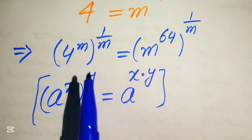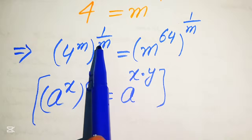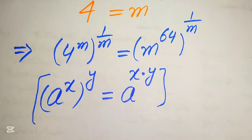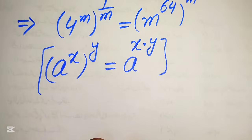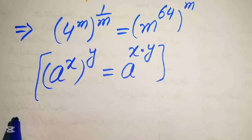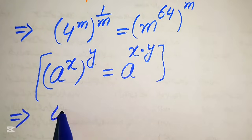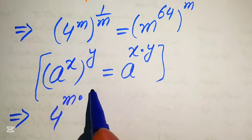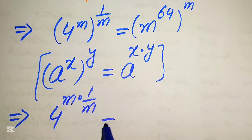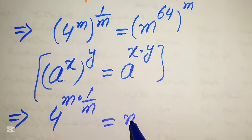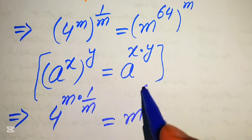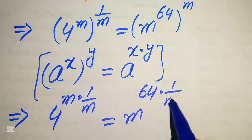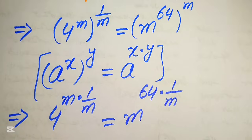Applying this rule, we multiply the exponents on both sides, giving us 4 to the power of m times 1 over m, equals m to the power of 64 times 1 over m.